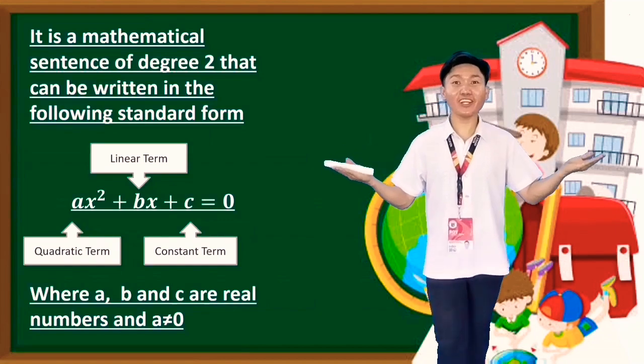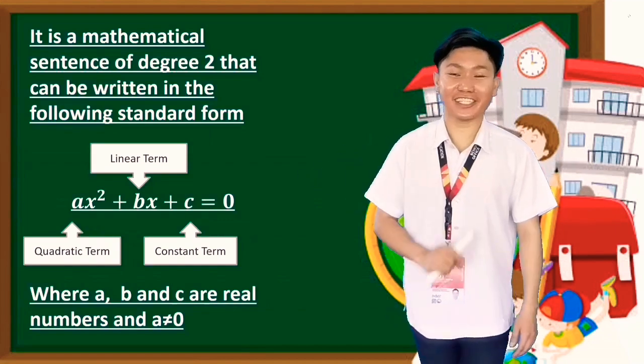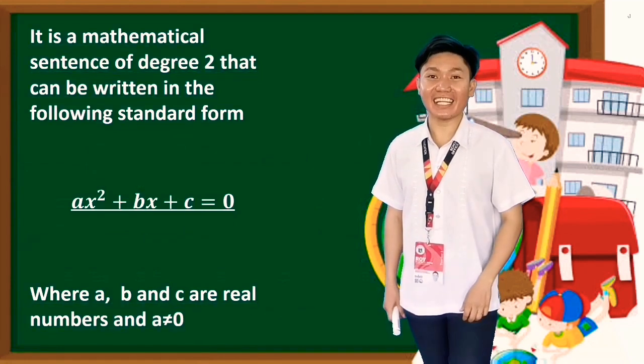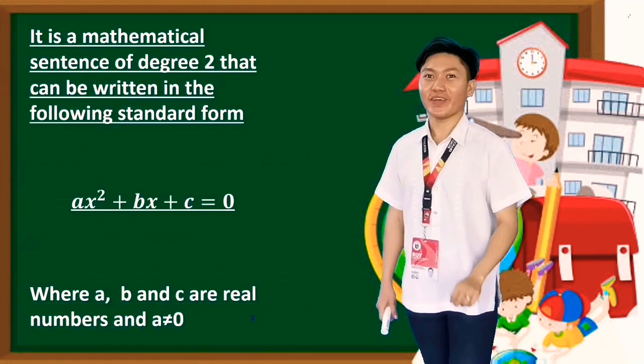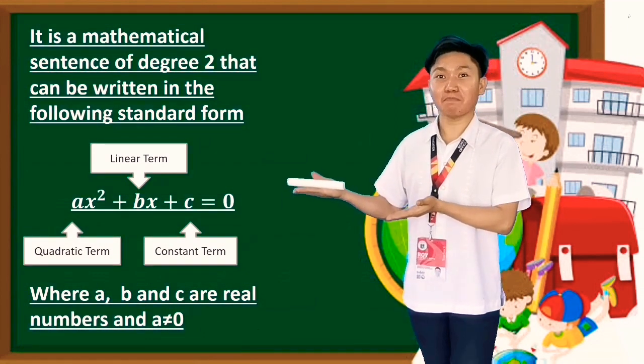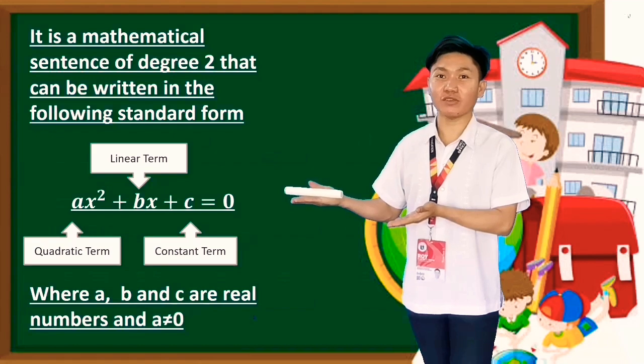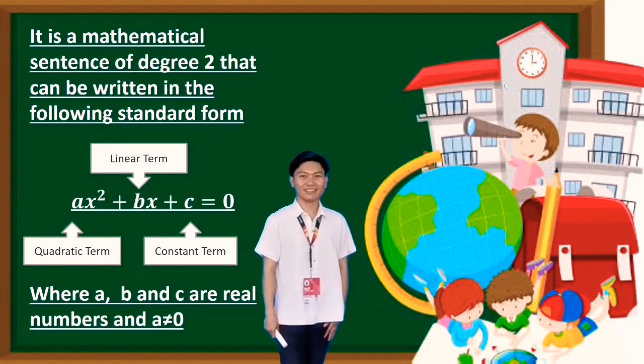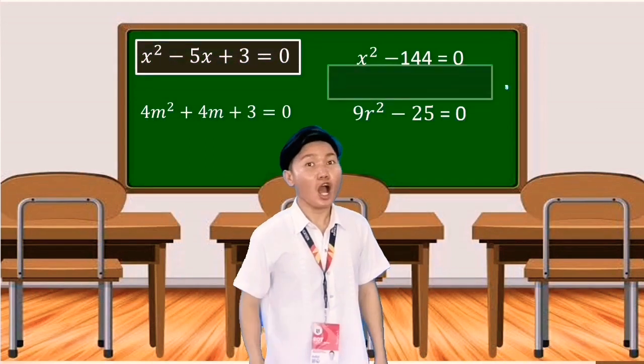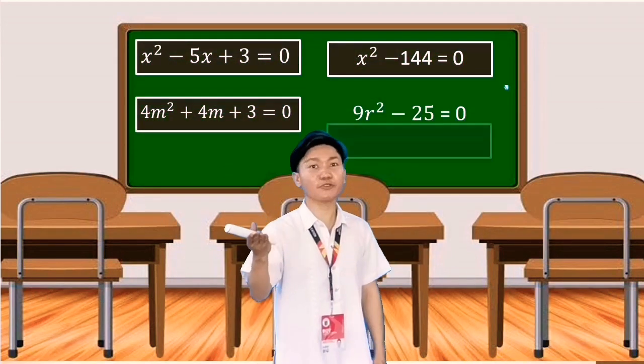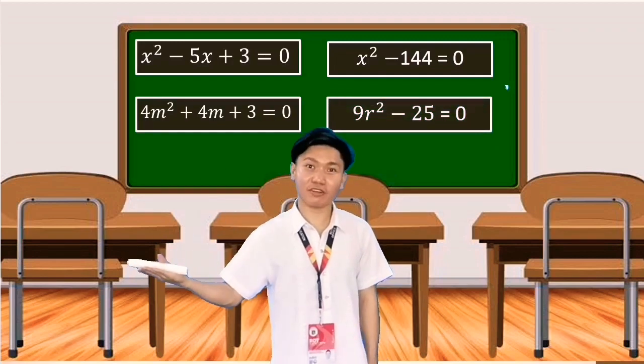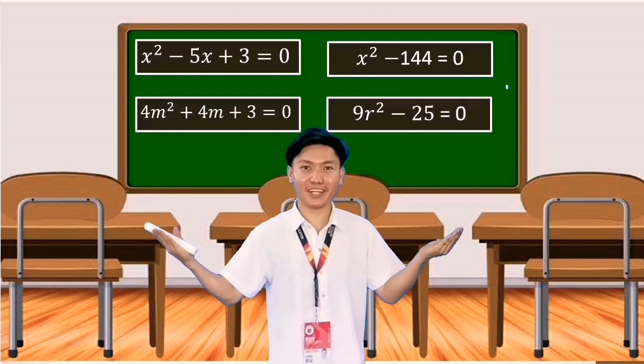Now, we have fully learned and understand the concept of quadratic equation. Don't forget that a quadratic equation contains a degree 2 and it has a standard form which is ax squared plus bx plus c is equal to 0. Here are some examples of a quadratic equation. But there are some examples that are not written in standard form. Let me show you some of those examples and let us try to transform it to standard equation.